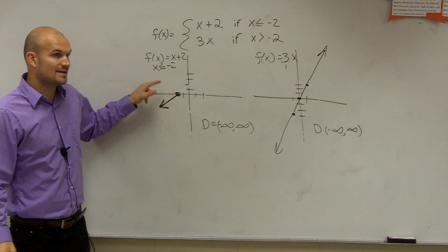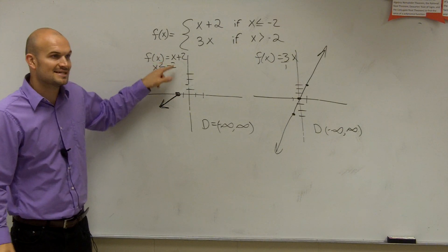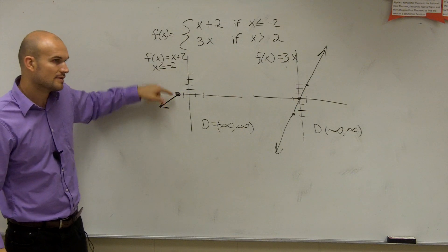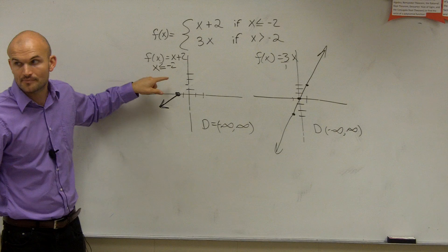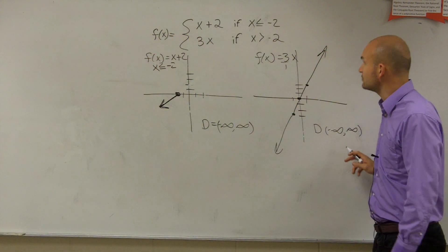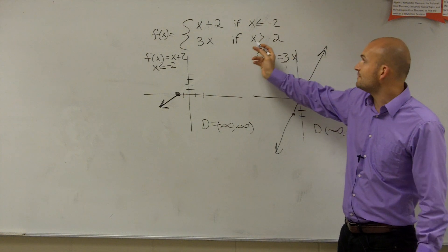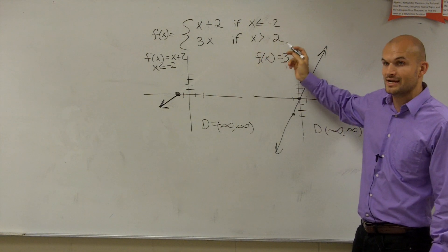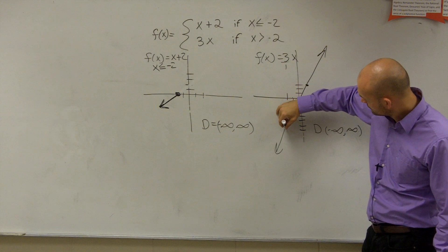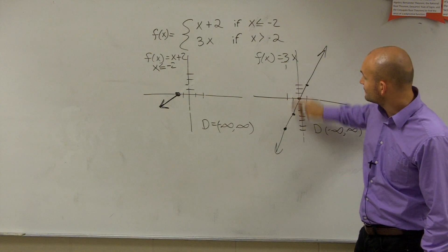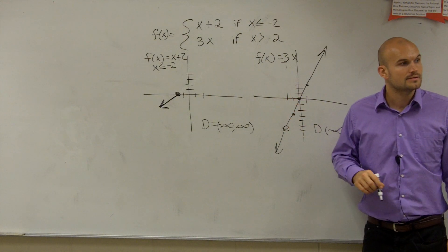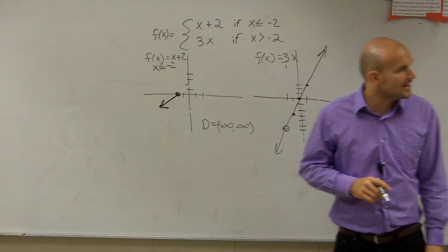The domain of this first piece is now x is less than or equal to negative 2. Then I look at the second function — this one has a domain of negative infinity to infinity, but I only want to graph it when x is greater than negative 2. So I look at when x is greater than negative 2 — it's going to be a big open circle right there, because it says greater than, not greater than or equal to.